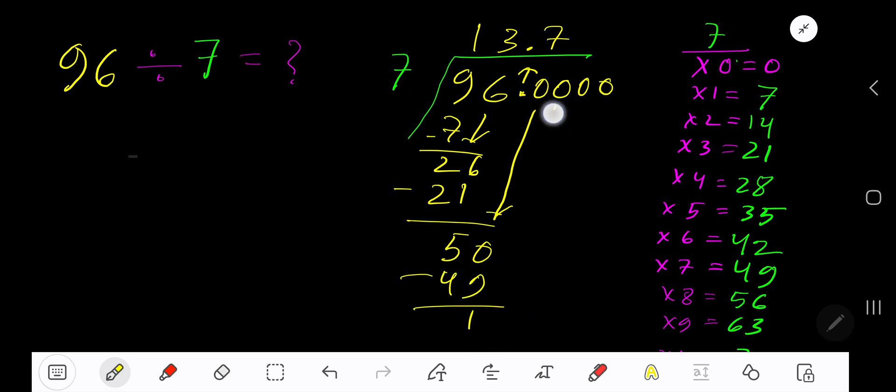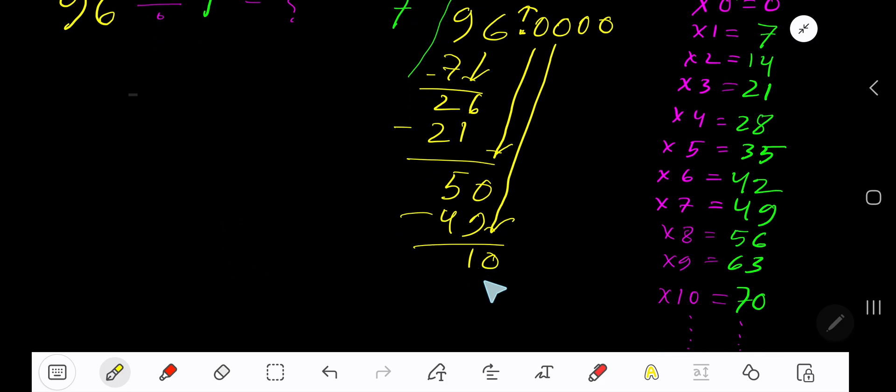Bring down another 0. 7 goes into 10 how many times? 1 time. 1 times 7 is 7. Subtract to get 3. Bring down another 0 to get 30.